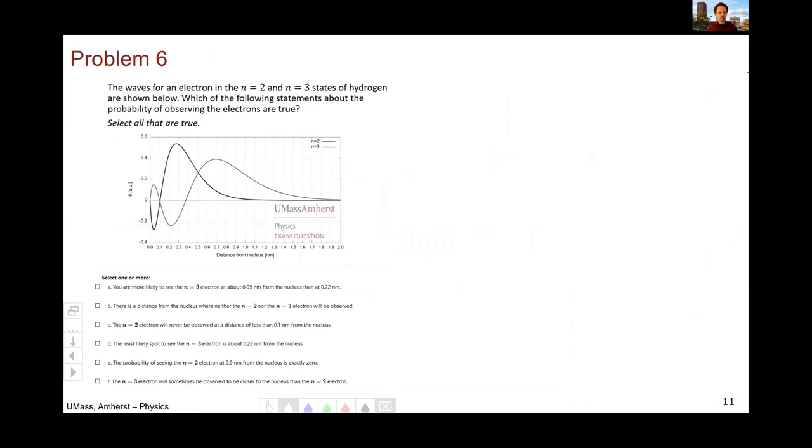Problem six was again identified as one of the easier ones by a lot of folks. So here you've got the n equals two and the n equals three waves. And basically you're going to go through them and see which are true. So the first one is you are more likely to see the n equals three electron at 0.05 than 0.22. And that is not true because remember, these are the wave functions and the probability is related to psi squared. And when I square this, it'll go positive and be bigger than that point at 0.05. There is a distance from the nucleus where neither the n equals two nor the n equals three will be observed. Yes, that is true. There's this point right here where they are both equal to zero.